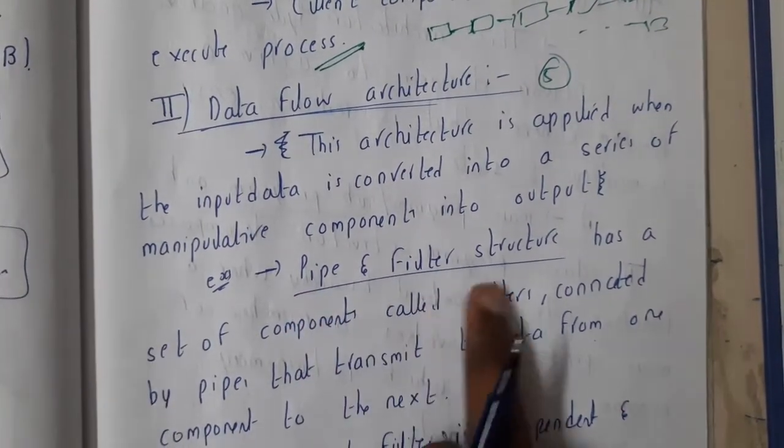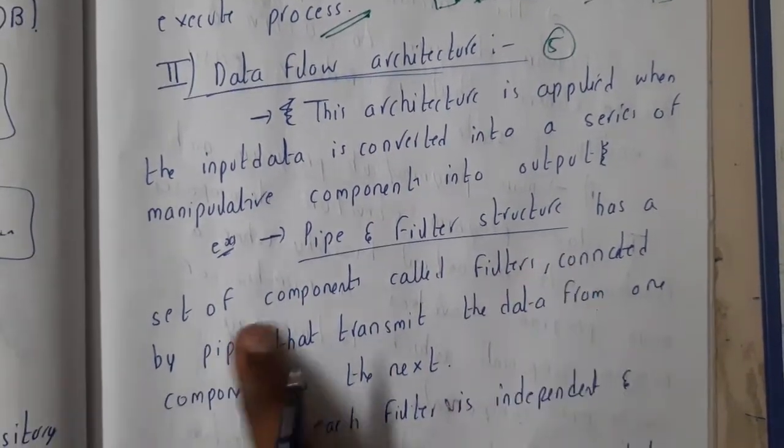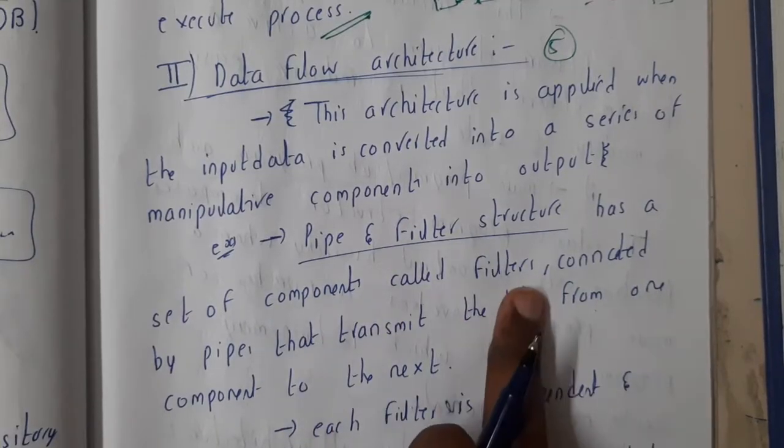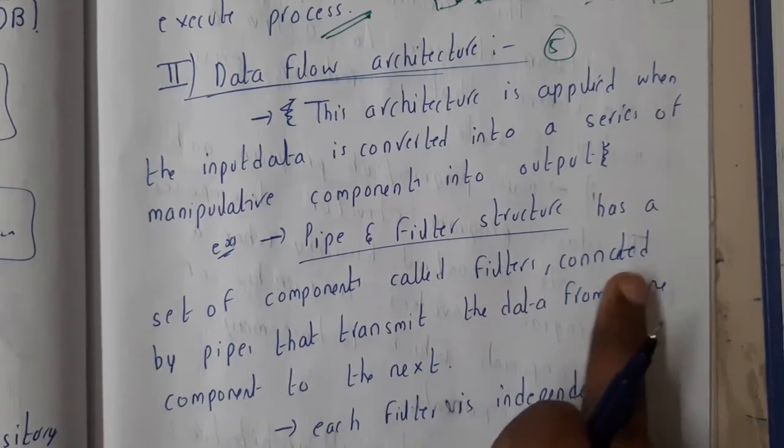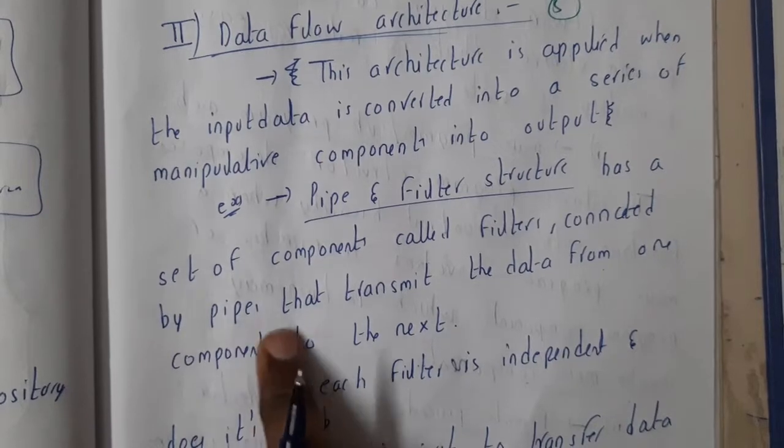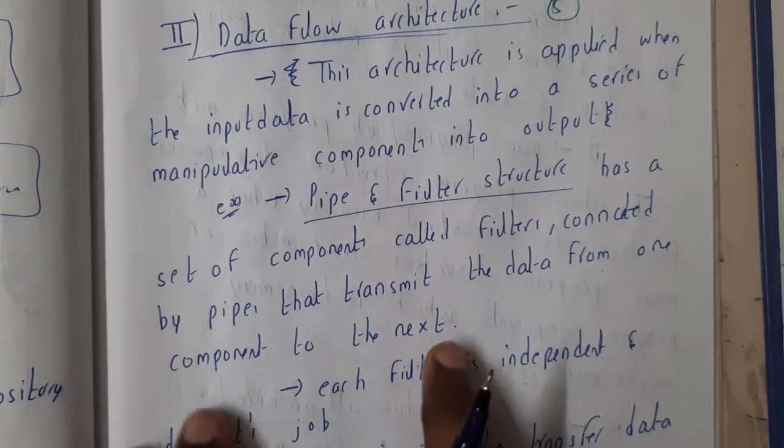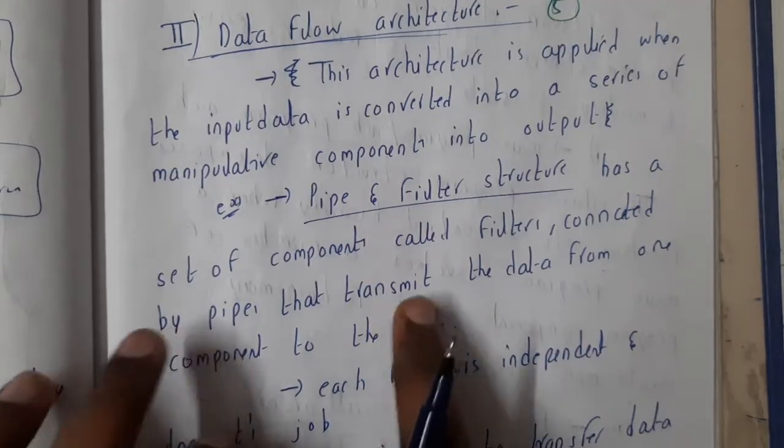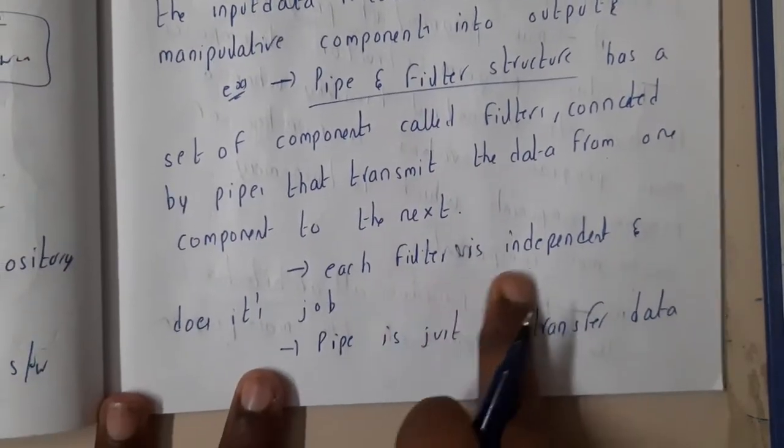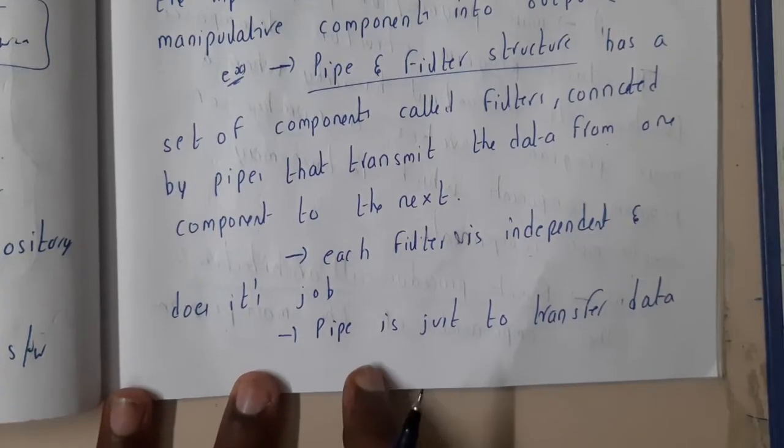The best example is pipe and filter structure, guys. It has a set of components called filters. It is connected by pipes that transmit the data from one component to another component. So basically here, the pipes will be transferring the data, and each filter is independent and does its job on its own.